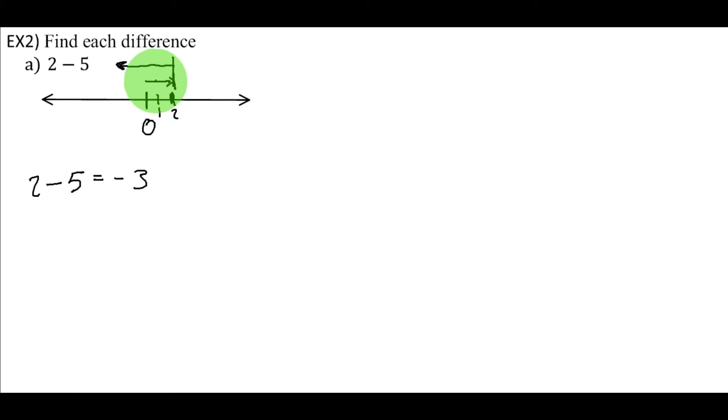We can see that on our number line here. This would be minus 1, minus 2, minus 3. And we can actually see this on the number line here. If we were to go back to 2 and take 5 away, well...